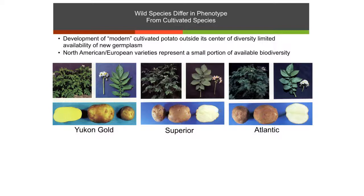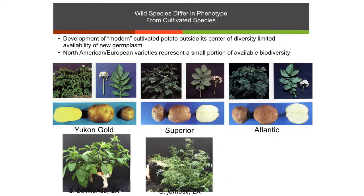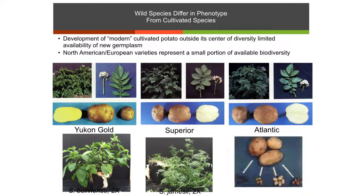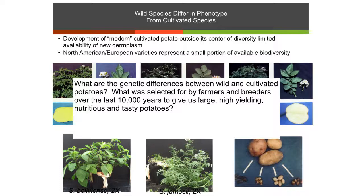If we go and look at wild potato species, these produce tubers as well. You can see the leaves look quite different from the cultivated potato, and the tubers — what we're eating — are actually quite small. Clearly there was selection for these giant tubers, selection for taste, and selection for nutrition. What we're working on is trying to find the genetic differences between wild and cultivated potatoes — what were those farmers selecting for when they just kept picking the best potato out of the field? We're doing that by doing a genome survey for domestication genes, and this is work that my graduate student Michael Hardigan is working on.